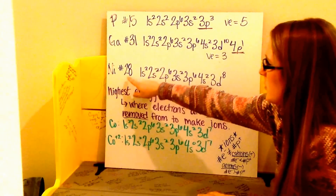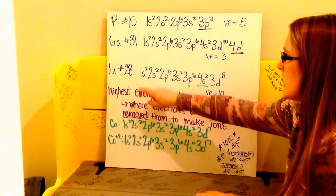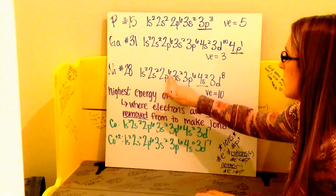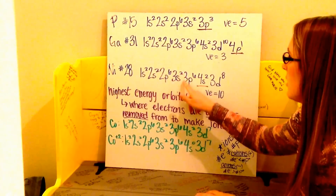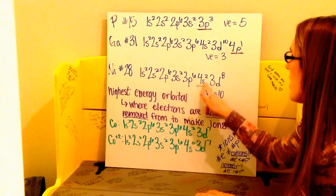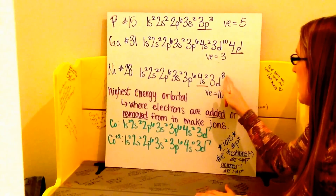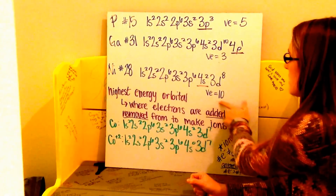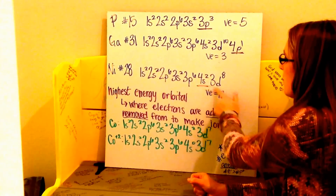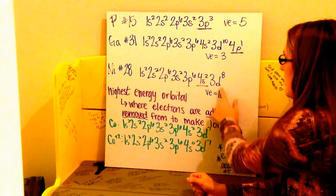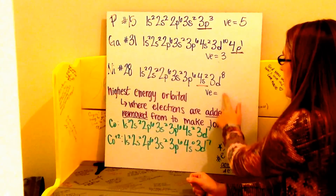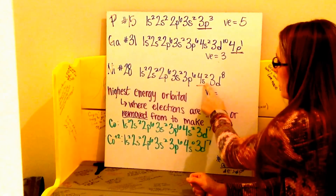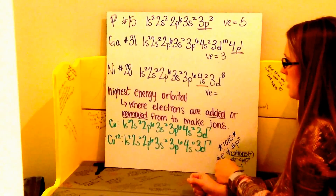Nickel, number 28, has electron configuration of 1s2, 2s2, 2p6, 3s2, 3p6, 4s2, 3d8. Again, you might have thought the number of valence electrons was 10 since these were our last orbitals. In fact, it is 2, because my highest energy level is 4 and there are 2 electrons in 4s.